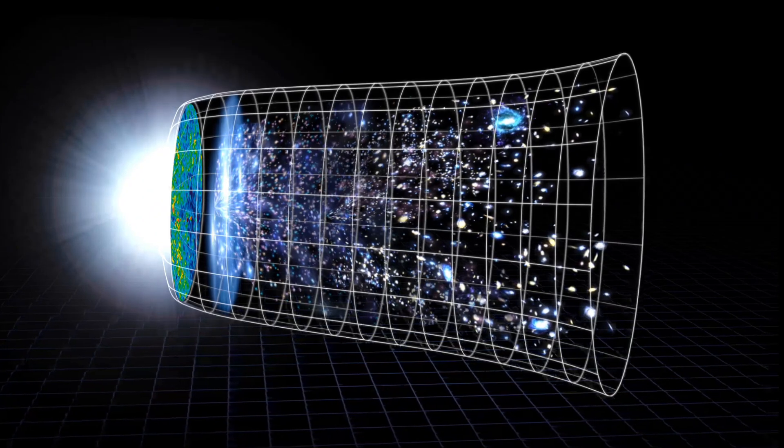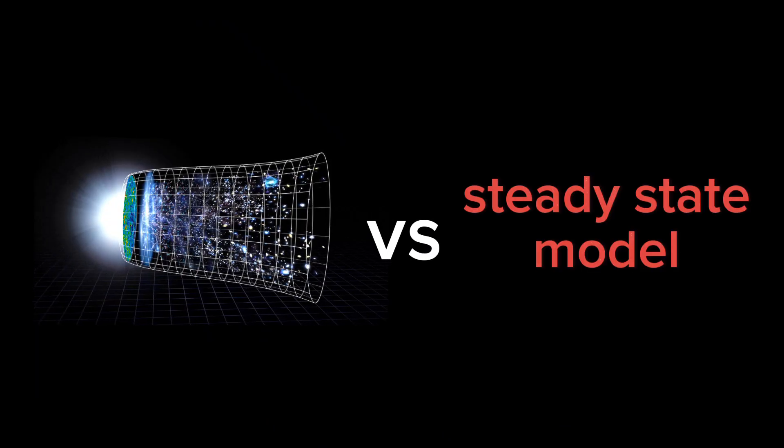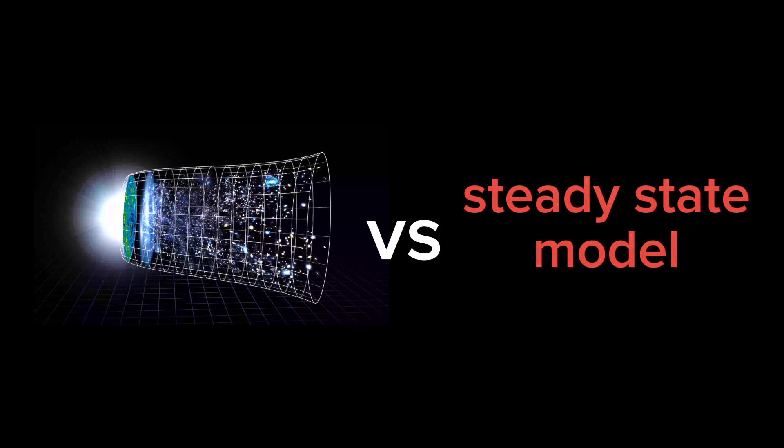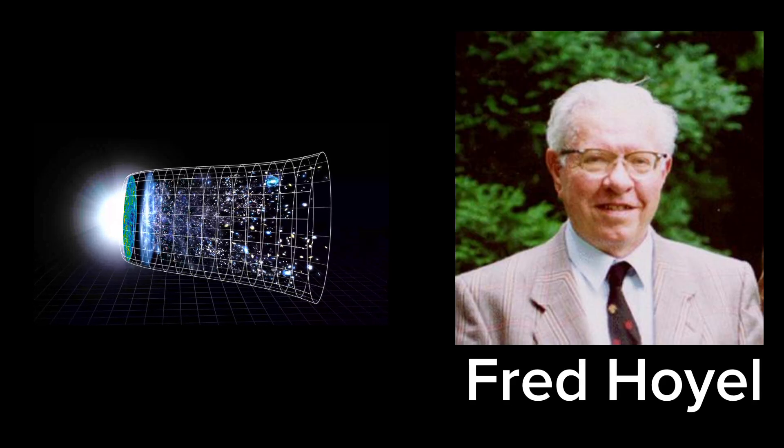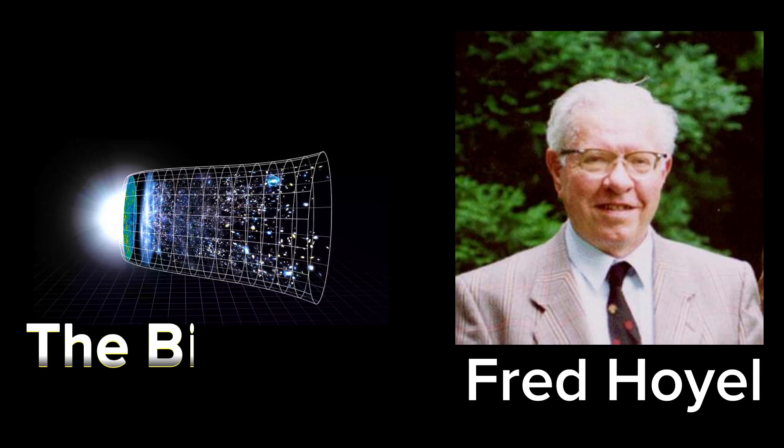During the 1930s, this cosmological model was competing with Fred Hoyle's steady-state model. Surprisingly, Hoyle was the first to name Lemaitre's theory as the Big Bang Theory.